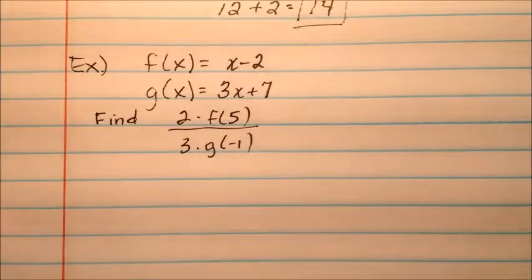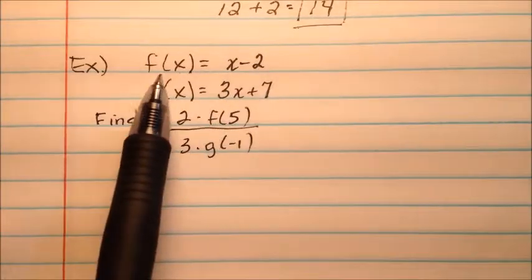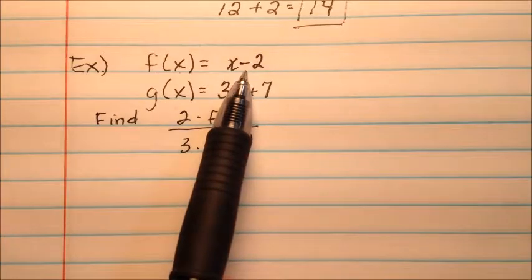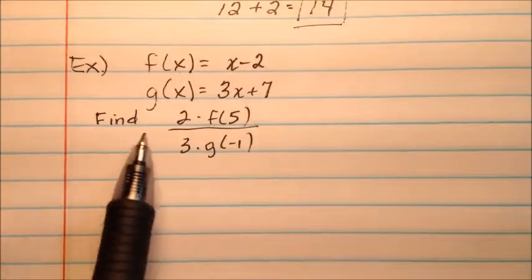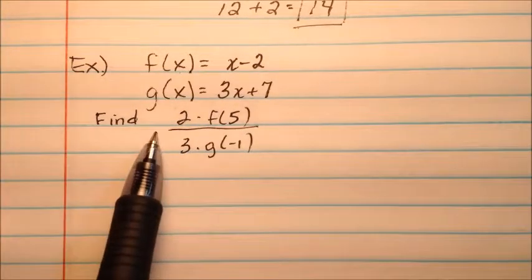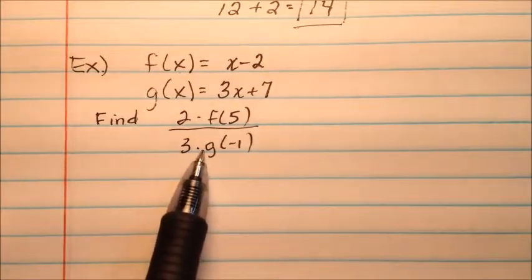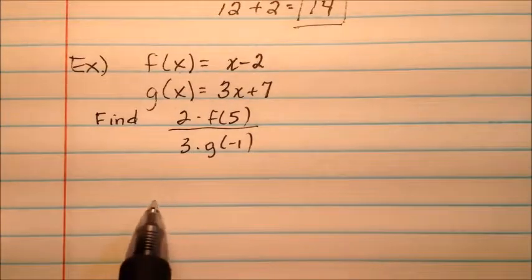In our last example here, we have two different functions, and these are a little easier than the last one was. f(x) equals x - 2, and g(x) equals 3x + 7, and we're finding this huge expression here, so 2·f(5), and that's all going to be divided by 3·g(-1). So let's go ahead and do that.